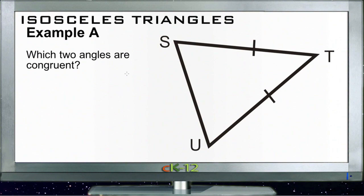Okay, let's review the example questions for isosceles triangles. Example A says which two angles are congruent. Now because this is an isosceles triangle, which we know since these two sides here are marked as congruent up here on the top and down here on the bottom right.